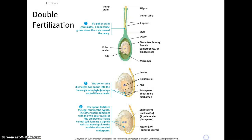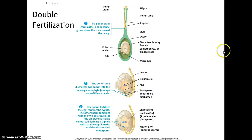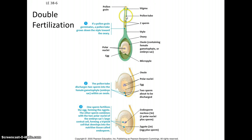Let's finish up plant form and function. What happens with double fertilization is that after the pollen is dispersed, it germinates — the pollen grain germinates — and the two sperm nuclei travel down what's called the pollen tube, and they work their way down to the ovule.